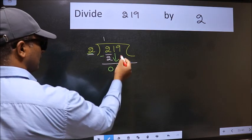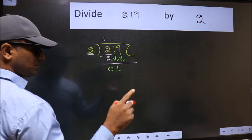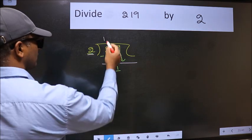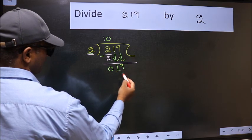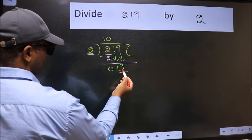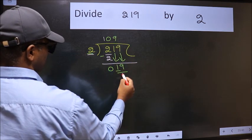So we should bring down the second number. And the rule to bring down second number is we should put 0 here. Then only we can bring this number down. Now 19. A number close to 19 in 2 table is 2 9's 18.